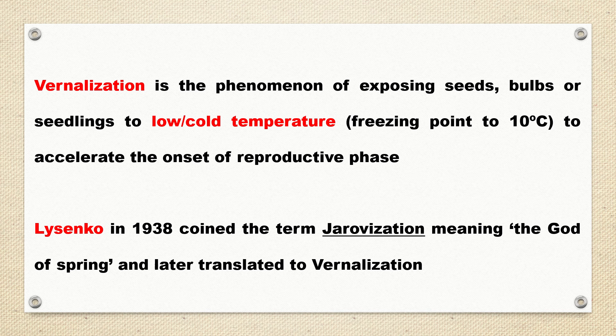Vernalization is the phenomenon of exposing seeds, bulbs or seedlings to cold or chilling temperatures — that is between the freezing point to 10 degrees Celsius — to accelerate the onset of reproductive phase. This acceleration of the onset of reproductive phase implies that the dormant period is shortened.